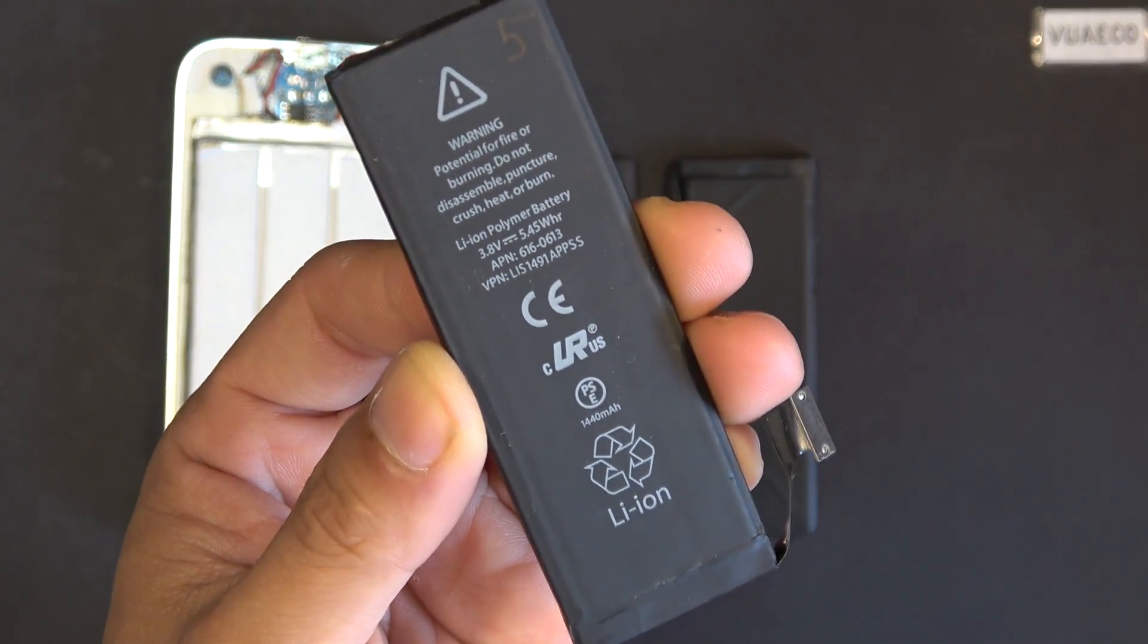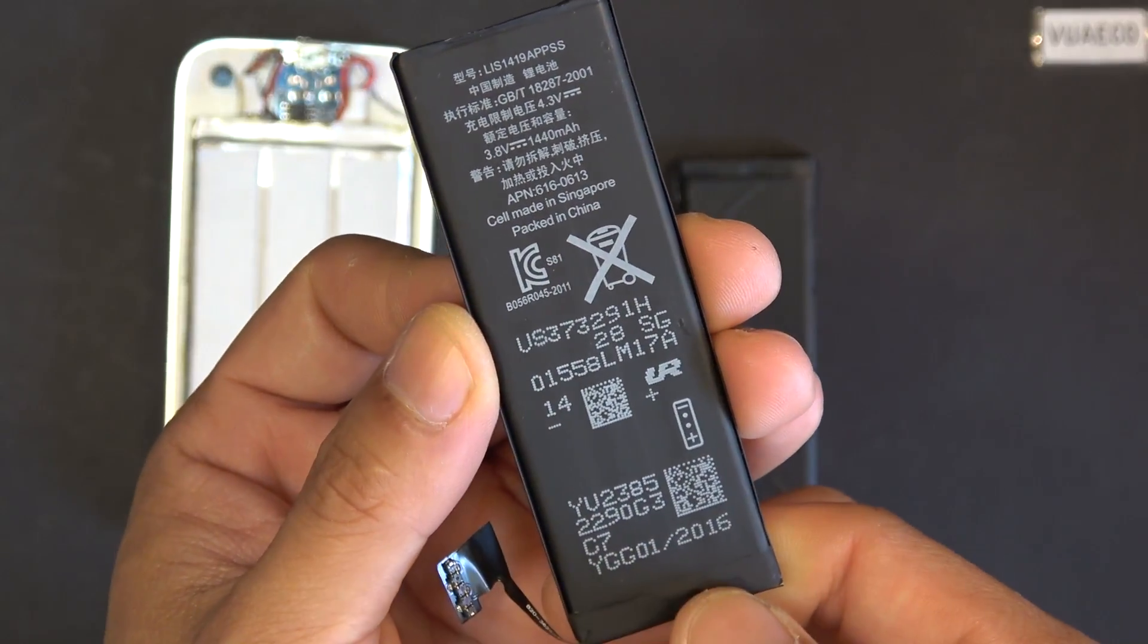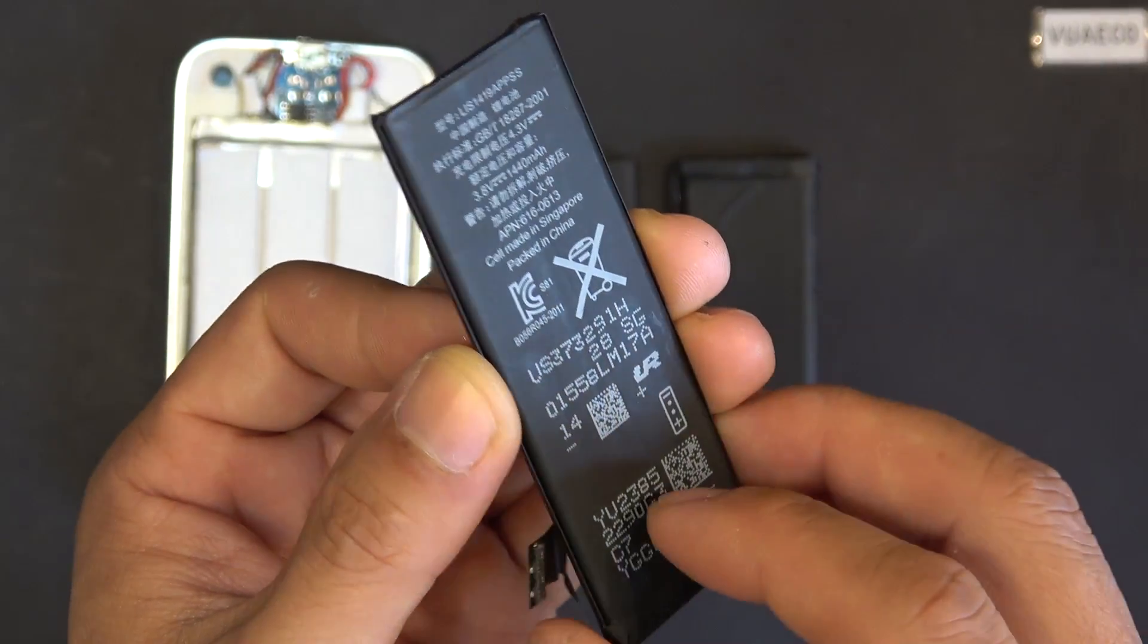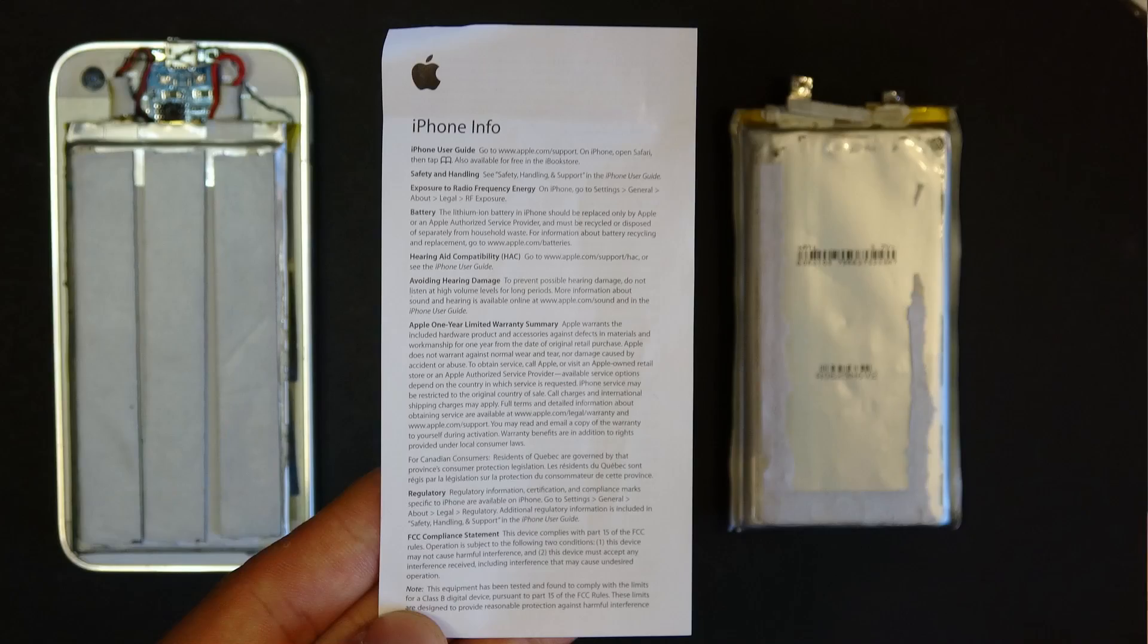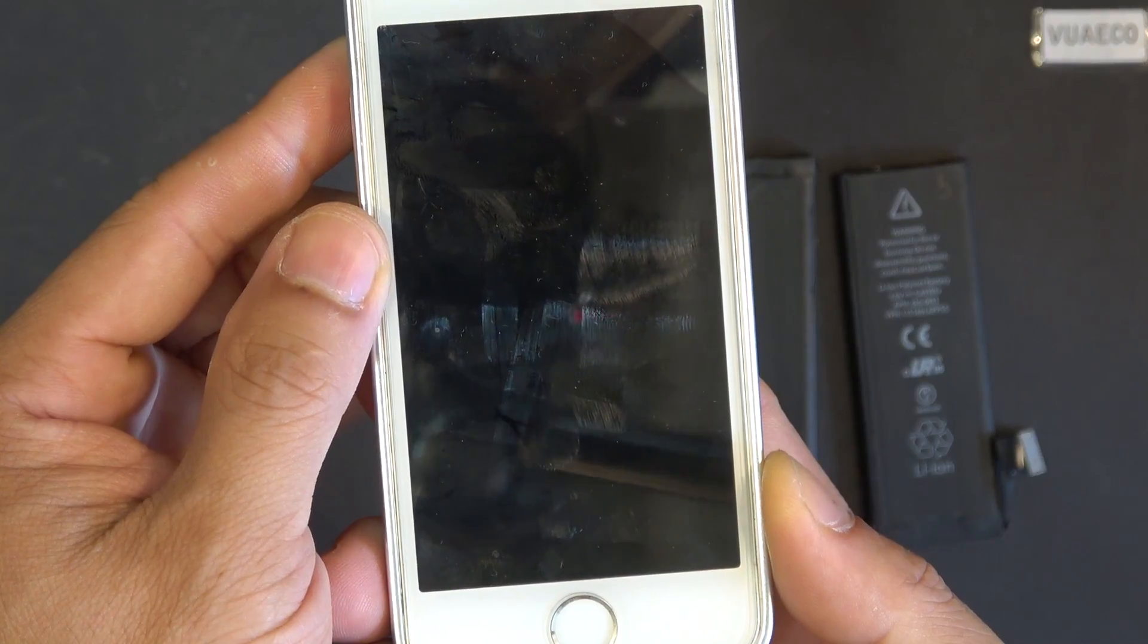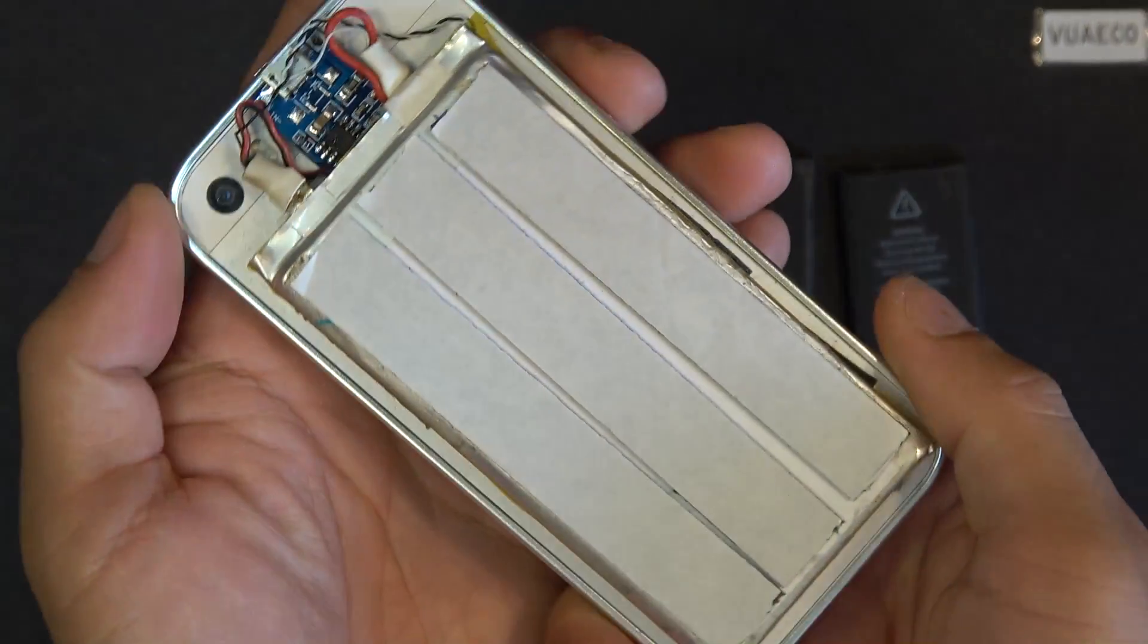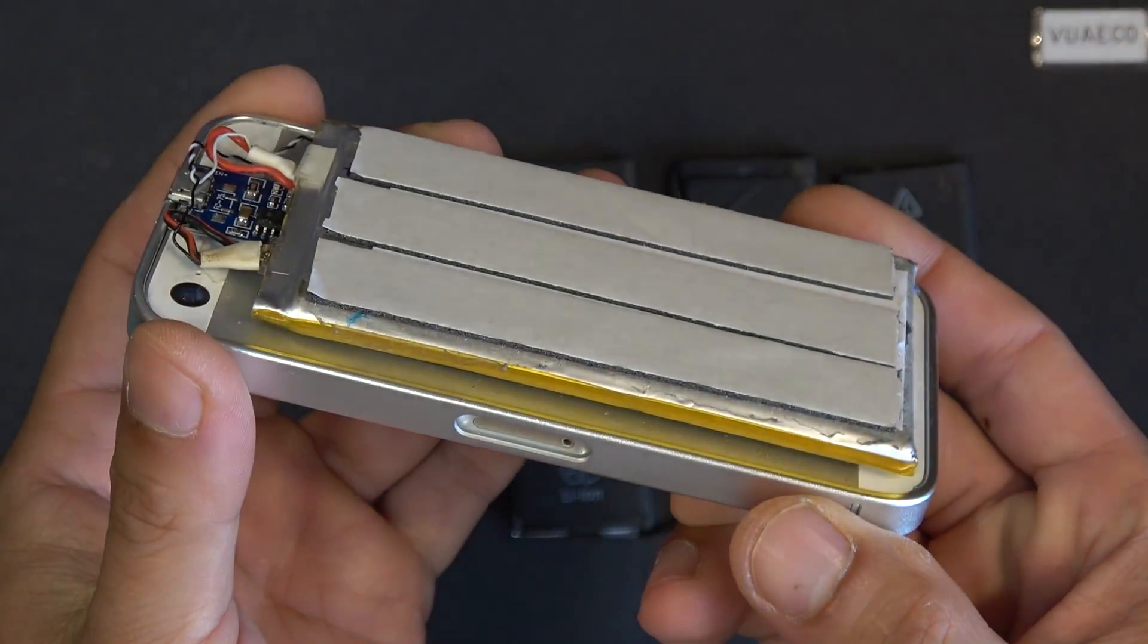Cell phone batteries typically only last for about one or two years before you need a replacement. This usually happens when the manufacturer's warranty just gets expired. Is that an inconvenient truth about the life cycle of a cell phone battery, or is it a big conspiracy of these giant corporations? A typical lithium-ion battery pack would last for much longer than that. So why does a phone battery die so quickly?